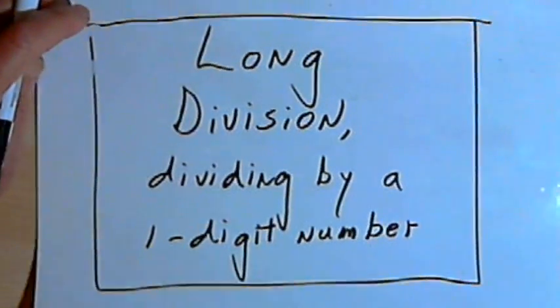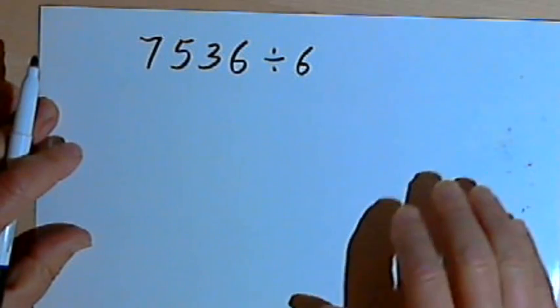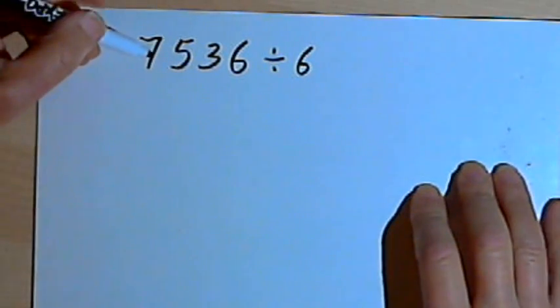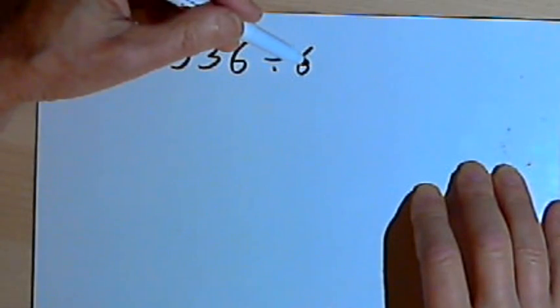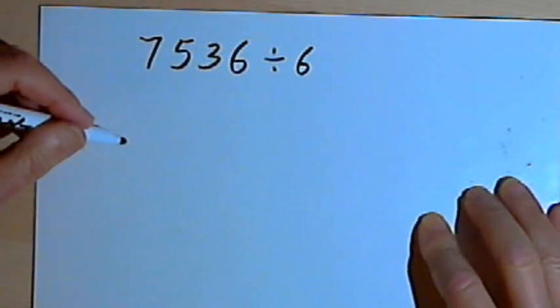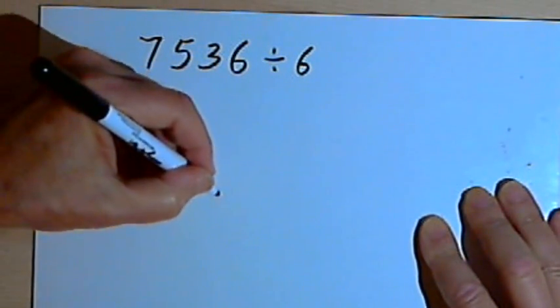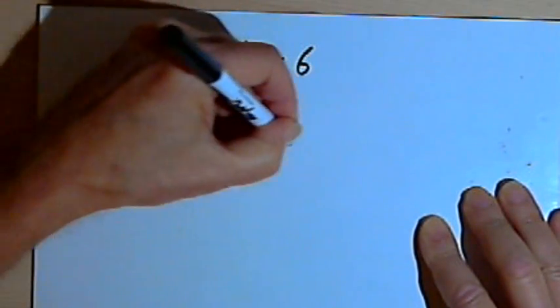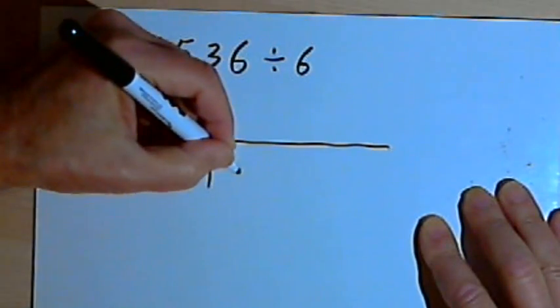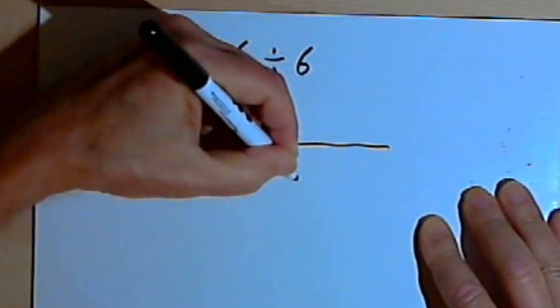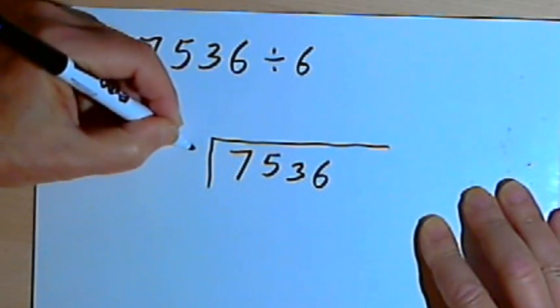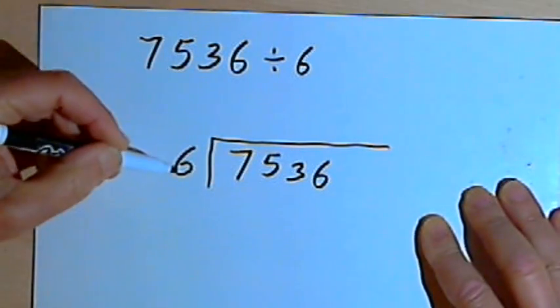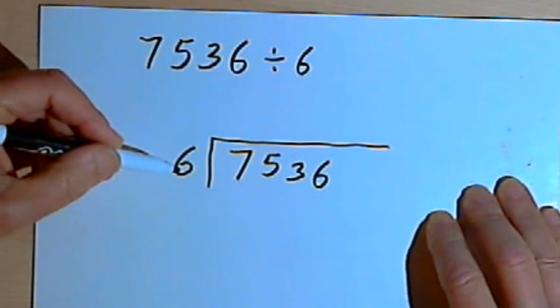Let's look at the first problem. So here I've got to divide 7536 by 6. So I'll set this up as a long division problem. I'll make a box, or half a box, and put 7536 in the box. And outside the box to the left of it I'll write the 6 that I'm using to divide by.